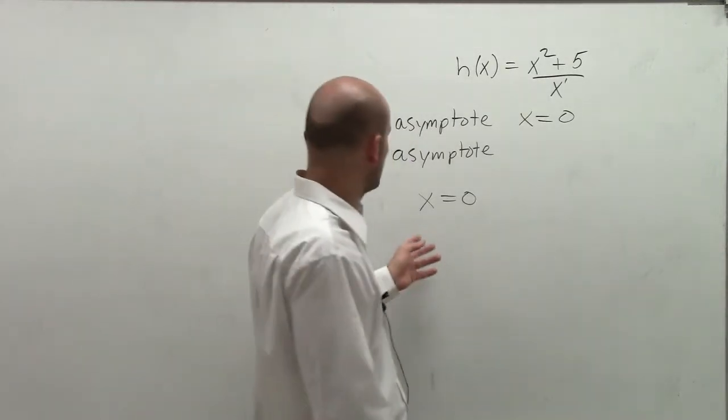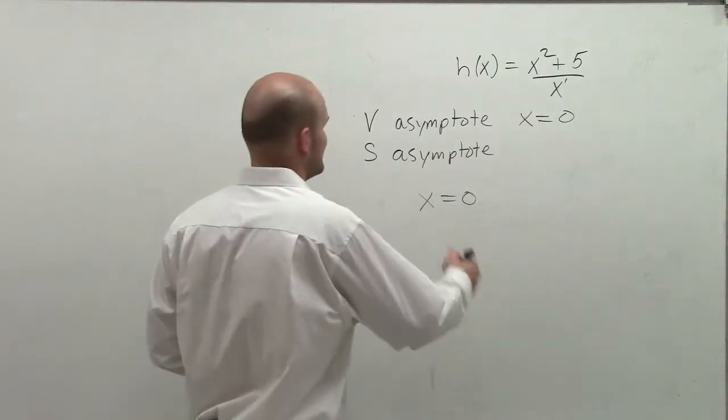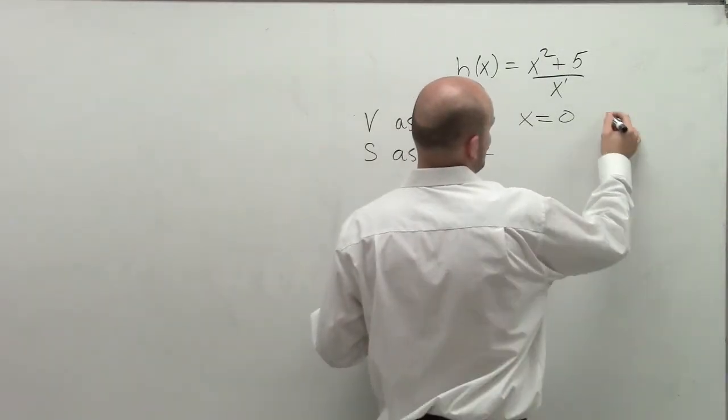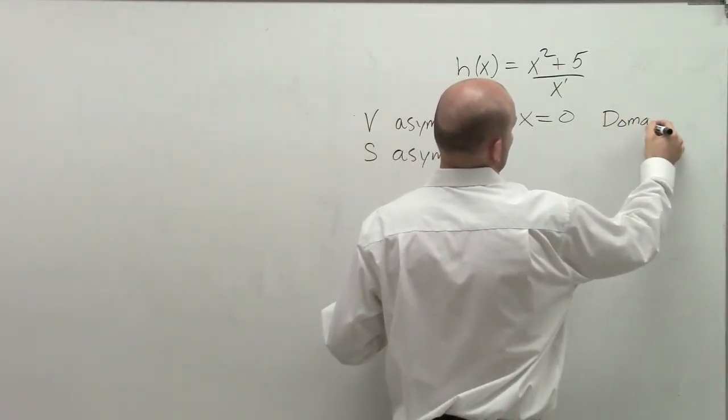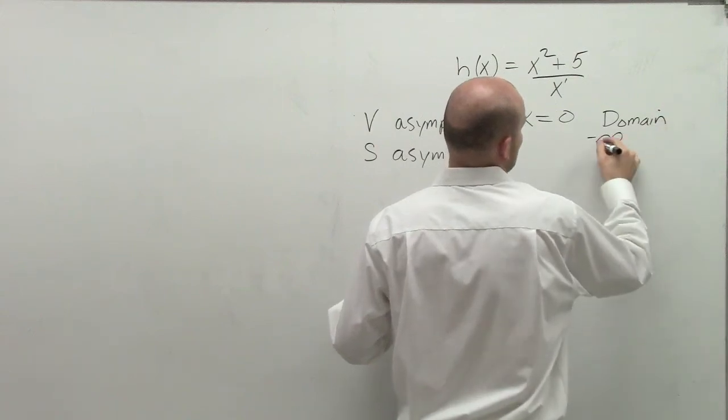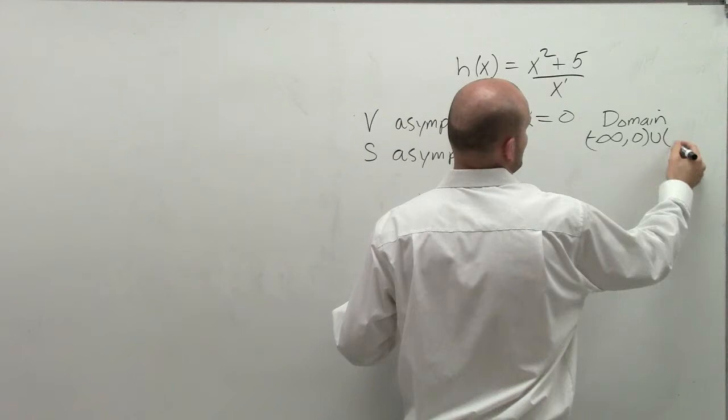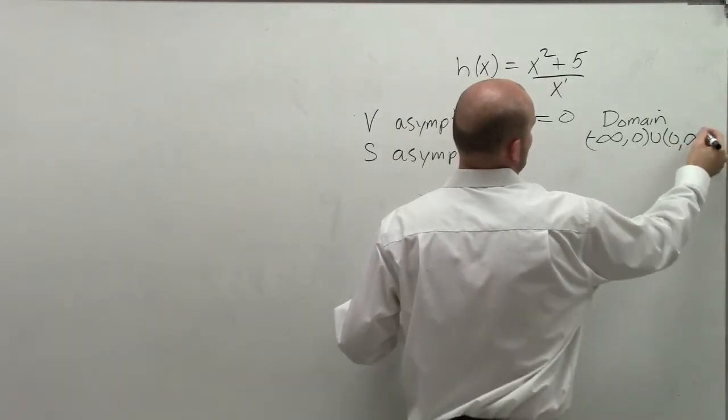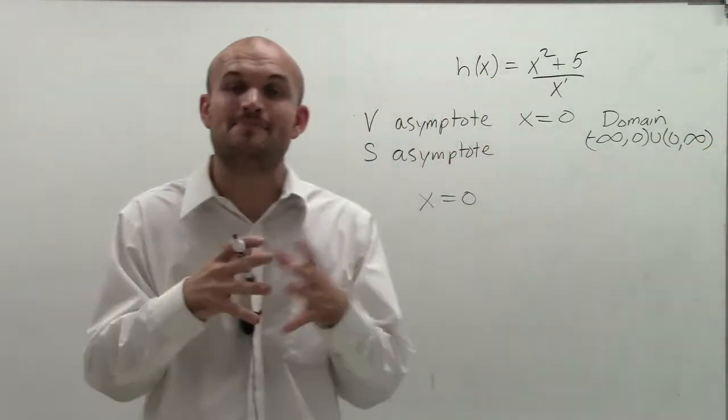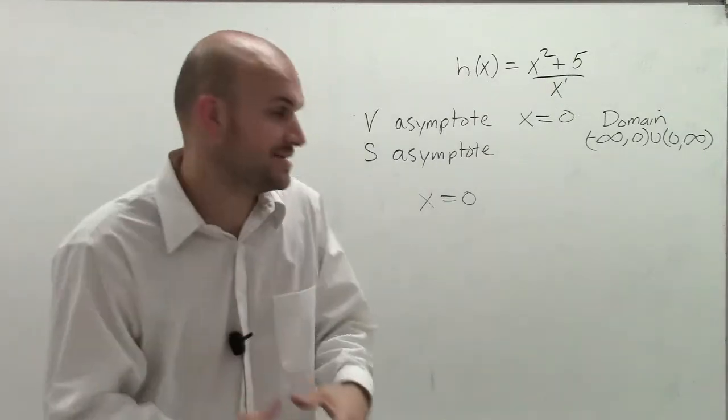So when I want to write my domain, let's write it down. So therefore, my domain is going to be from negative infinity, comma 0, union 0, comma infinity. So that means when writing it like that, I am not including 0 as part of my domain.